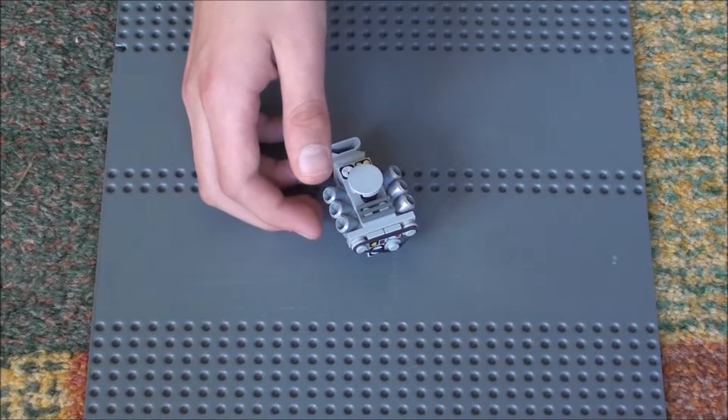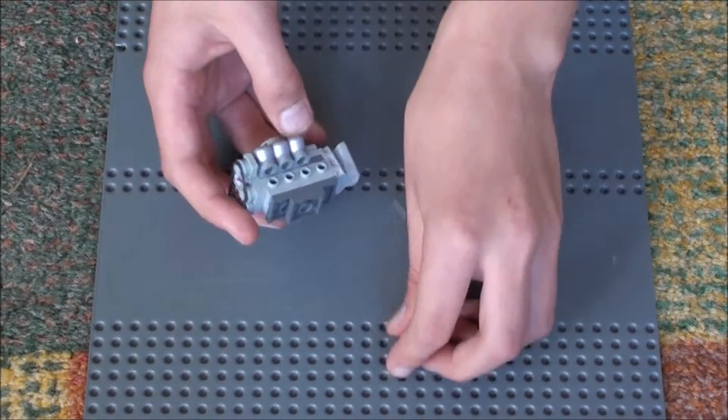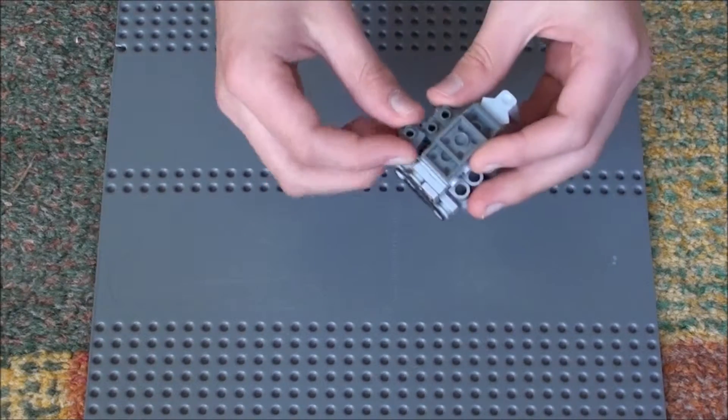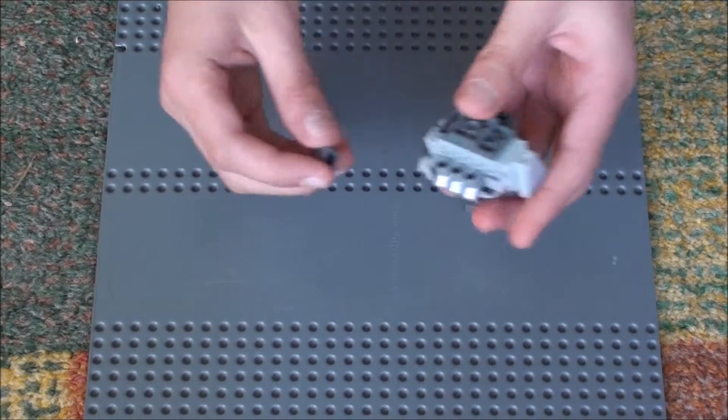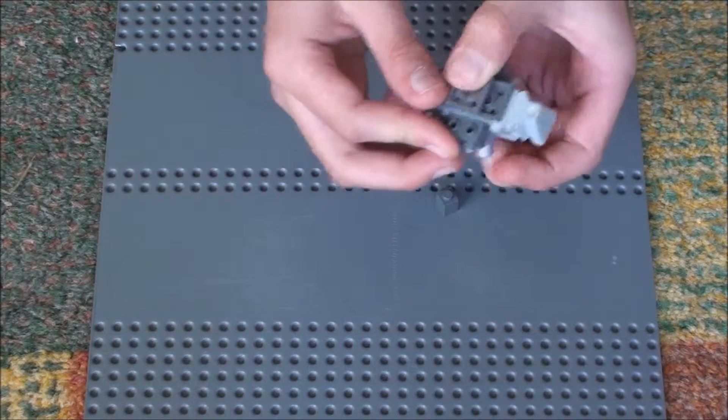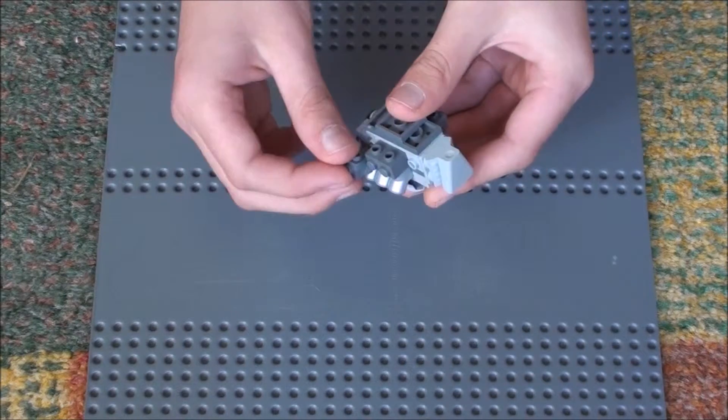Then get the 6 dark grey side pieces and put them on the other side pieces like that. And the others on the other side. Bit of engine trouble there. Like that.